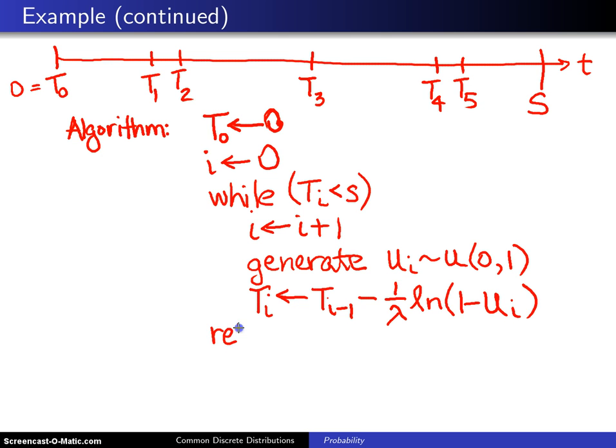At the very end, once we're out of that loop, we can return the values in our Poisson process, which are t₁, t₂, all the way up to t_(i-1). Keep in mind that this last value will jump beyond s and so it does not get returned.